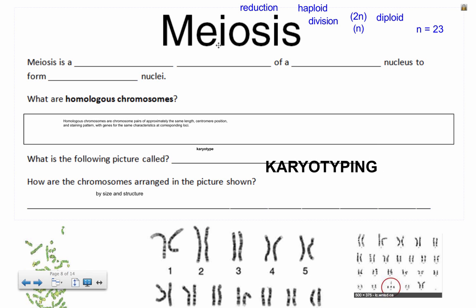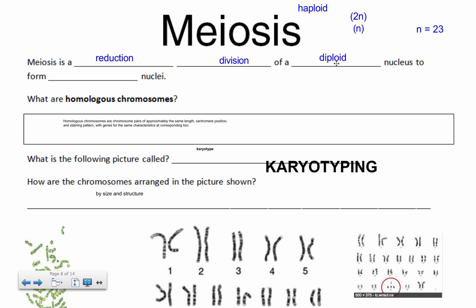A quick review: meiosis is a reduction division of a diploid nucleus to form haploid nuclei. Diploid we represent by saying 2n, and haploid means n. The diploid number and haploid number are different for different organisms. For humans, the diploid number is 46 and the haploid number is 23, therefore n equals 23.